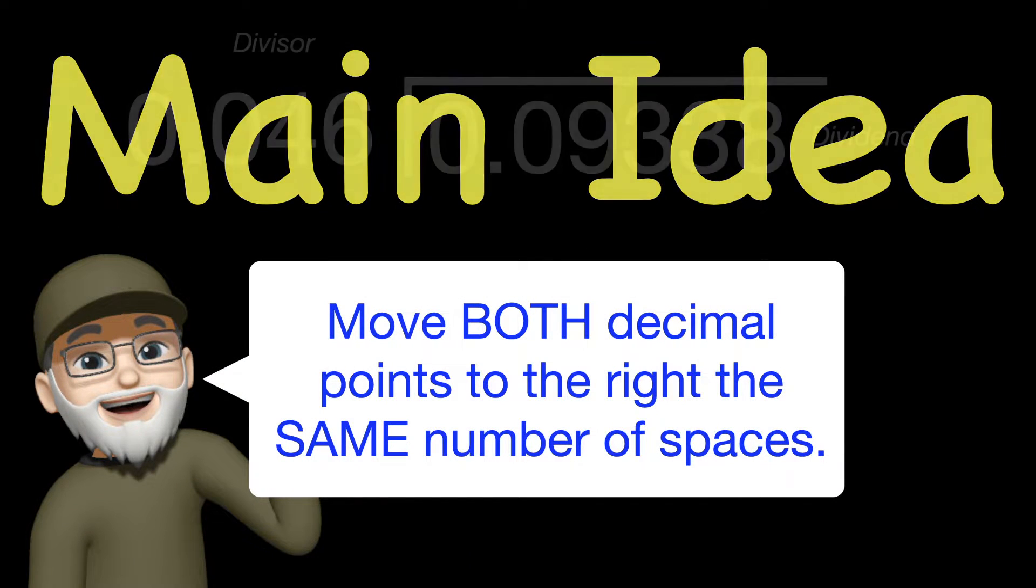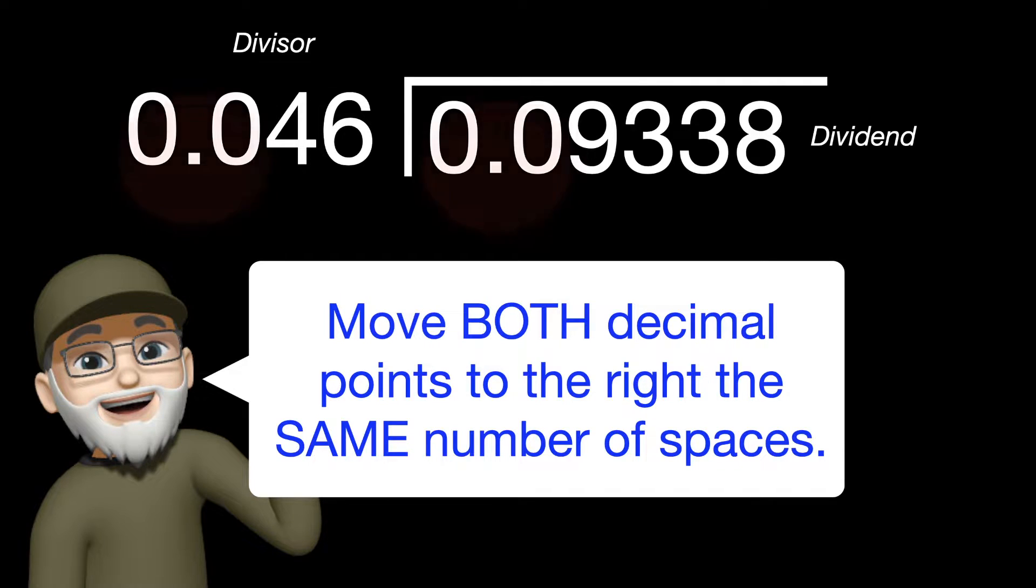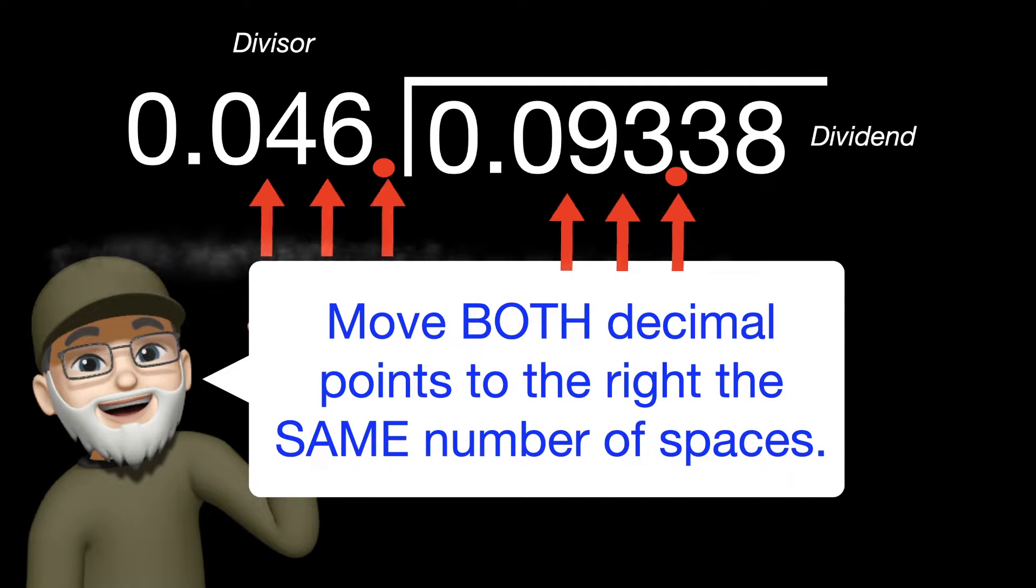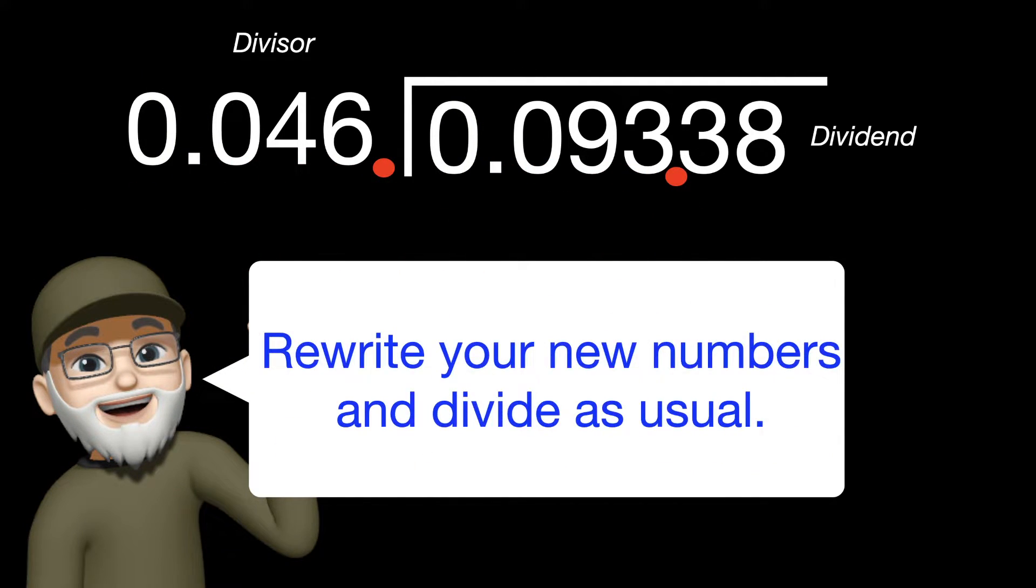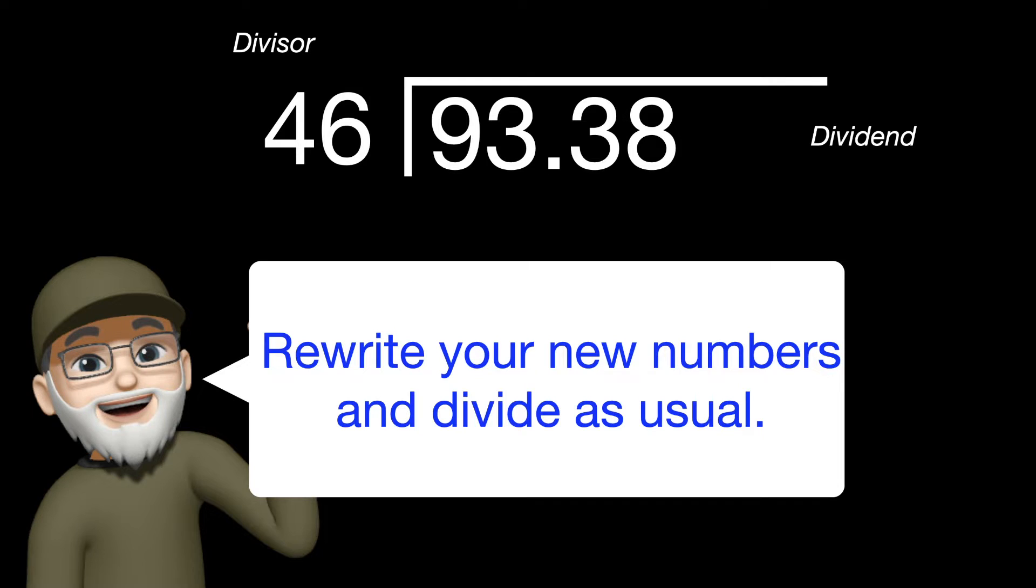The main idea for today's lesson is that for problems like this, your job is to move the decimal point to the right the same number of spaces. Then rewrite the new numbers that you create when you move the decimal point and divide as usual.